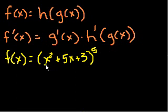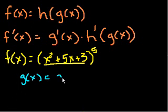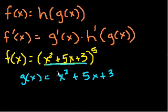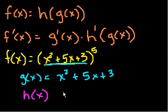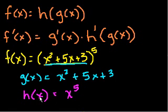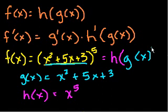g of x would be this inner function. So g of x here is x squared plus 5x plus 3 — that's g of x. And h of g of x is this whole thing, so what would h of x be? Well, h of x would just be x to the fifth, because this expression is you took the entire g of x and put it in for x. If you take this entire expression and substitute x for this entire expression, you get this expression, showing that f of x equals h of g of x.